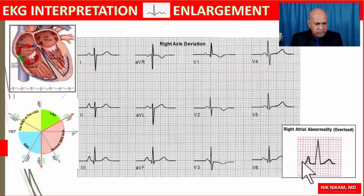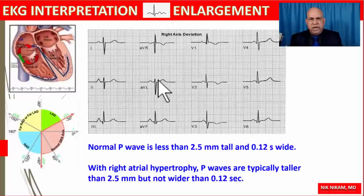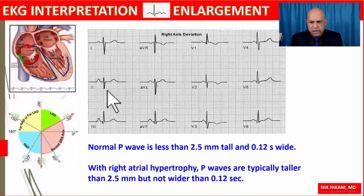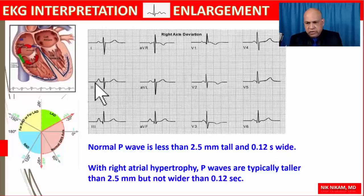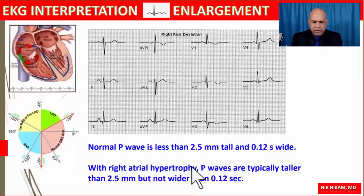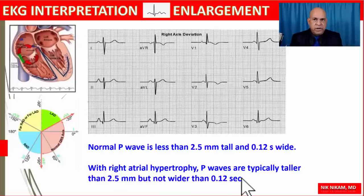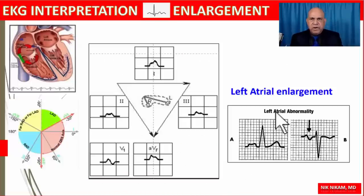This shows how the P wave looks in a patient with right atrial enlargement. The normal P wave is less than 2.5 millimeters in height and less than 120 milliseconds — or three small boxes — in width. In right atrial hypertrophy, the P waves are typically taller than 2.5 millimeters but are not wider than 120 milliseconds.